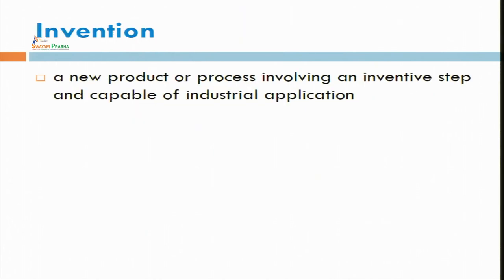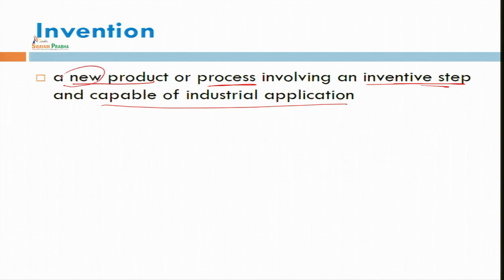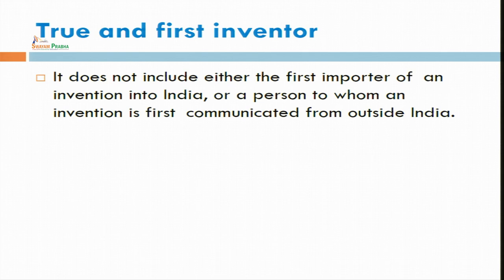There must be a new product or process for an invention. You can also get a patent on either process or product or both. It must have some inventive step or be capable of industrial application. A new thing must be there, some inventive step must be there, or it must be capable of industrial application — some type of utility must be there for getting a patent. This definition of who is the true and first inventor is also given under the Indian Patent Act 1970.